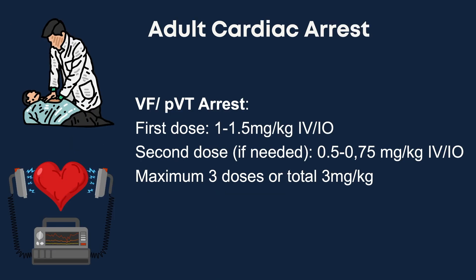In cardiac arrest from VF or pulseless ventricular tachycardia, the initial dose is 1 to 1.5 mg per kilogram IV or IO. For refractory VF, we may give an additional 0.5 to 0.75 mg per kilogram IV push and repeat it in 5 to 10 minutes. Maximum dose is 3 mg per kilogram.